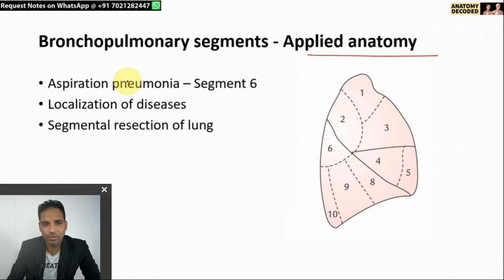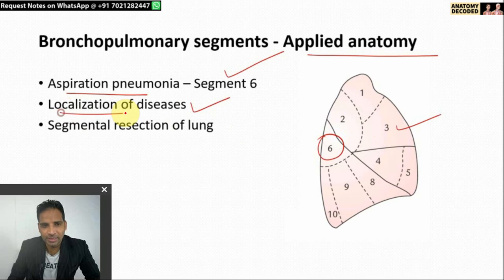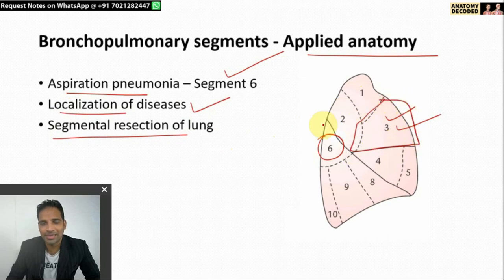In the applied anatomy of bronchopulmonary segments: aspiration pneumonia in the supine position is more common in prolonged bedridden patients, and segment 6 — the apical basal segment — is most vulnerable, so abscess formation occurs most frequently here. Because bronchopulmonary segments are discrete units, certain diseases like bronchiectasis can get localized to one segment. If a disease is localized to one segment, segmental resection of the lung can be performed since it is a surgical unit.